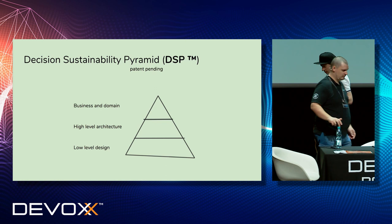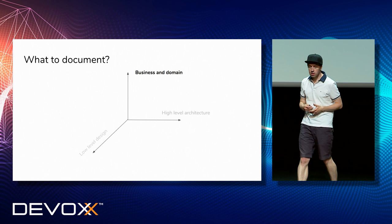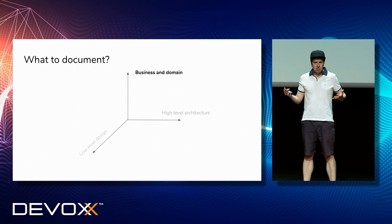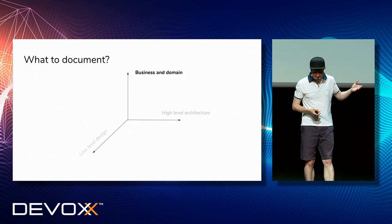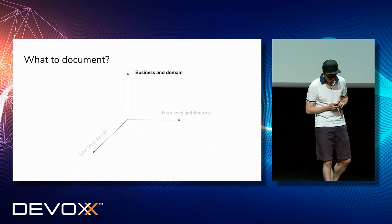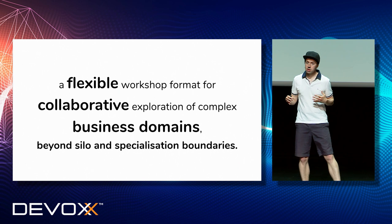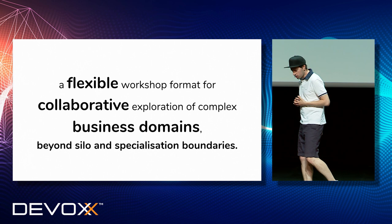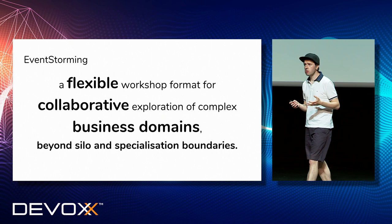What can those principles be, and how can we approach documenting relevant knowledge in a relevant area? We'll try to walk through case by case, starting with business and domains. Whenever you start working with any project, you want to know what it's about — is it an e-commerce site, a sport booking website? You want to capture that knowledge. What I'd like to describe is a flexible format of a workshop where you can collaboratively explore a very complex business domain beyond the silos and specialization. It's called EventStorming.